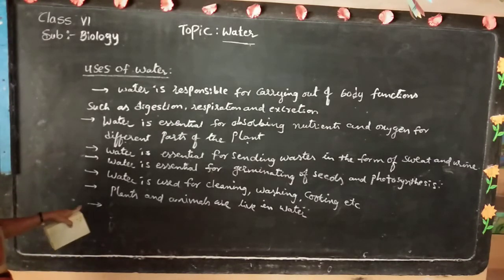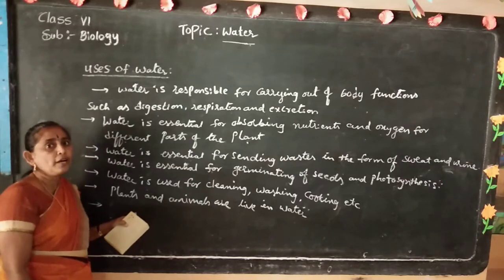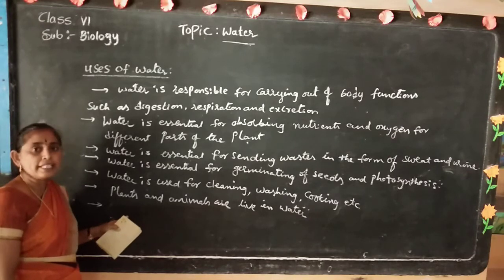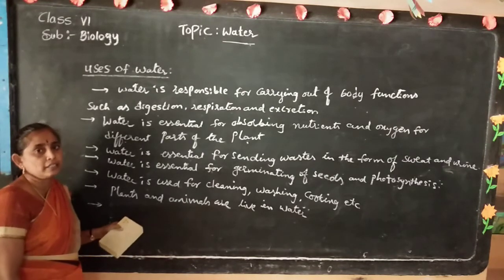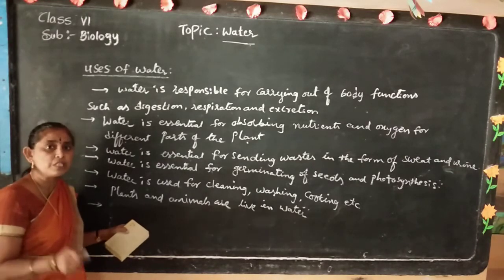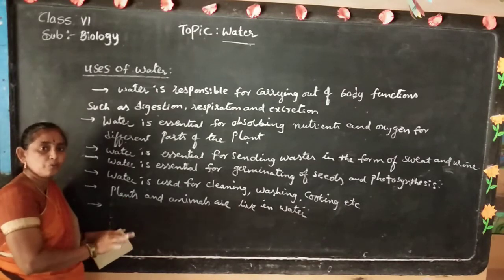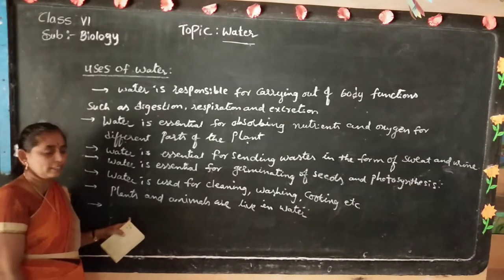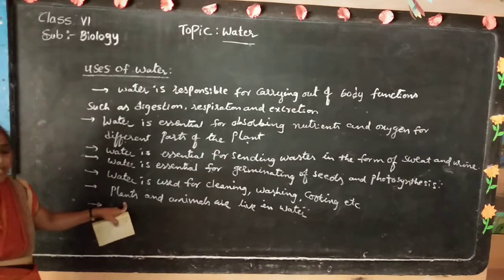Some plants live on land and in water also. For example, desert plants live in desert areas where there is scarcity of water — they are not available in water, but their roots go into deeper layers of the soil to absorb water. But aquatic plants' roots and leaves float on the surface of the water. The plants which live in water are known as aquatic plants.